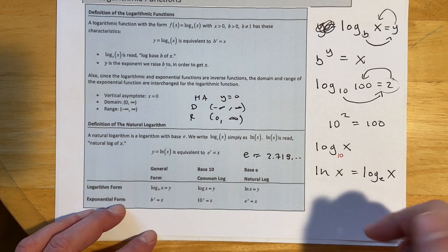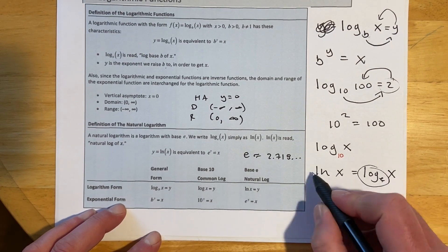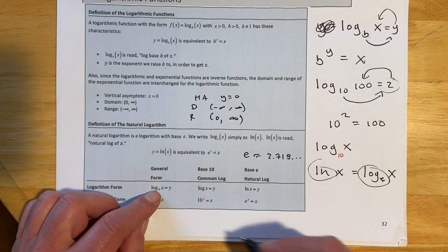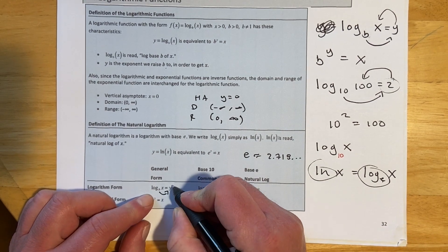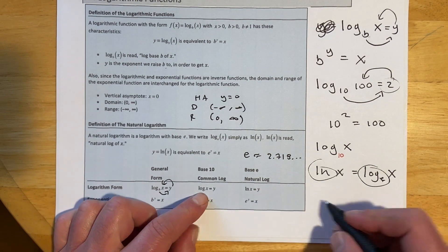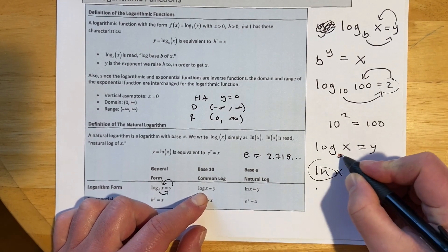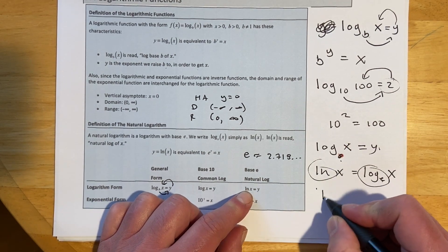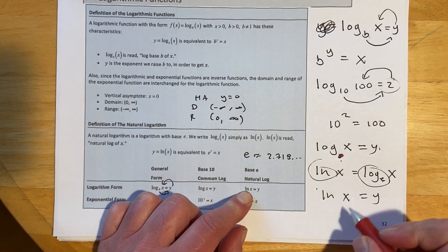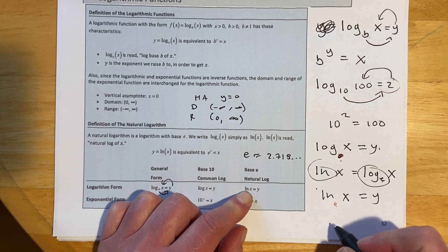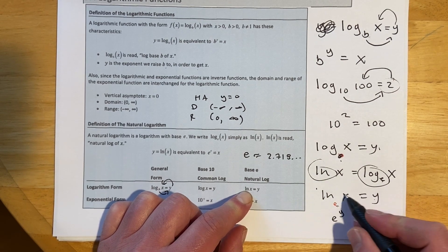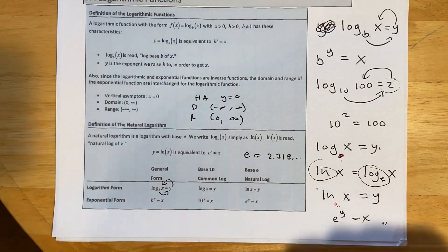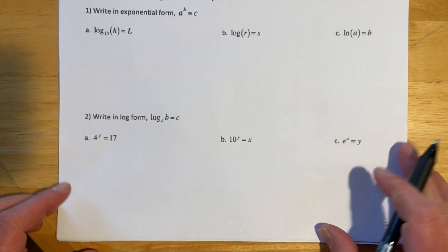ln(x) means the same thing as log base e of x. All three forms have exponential equivalents: log base b of x equals y means b^y = x; log(x) = y (no base written means base 10) means 10^y = x; and ln(x) = y means e^y = x. That last one is the exponential form of a log, not an exponential equation.